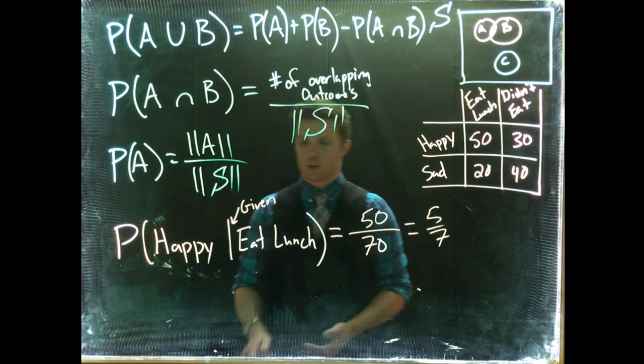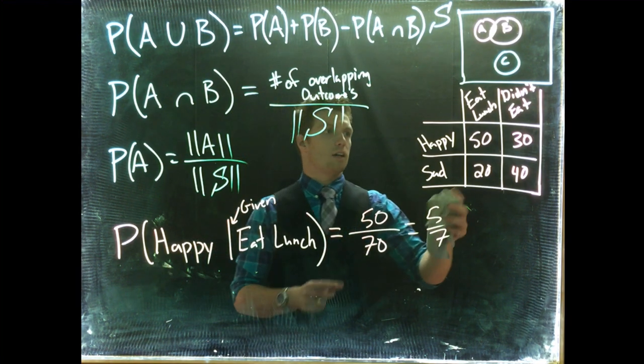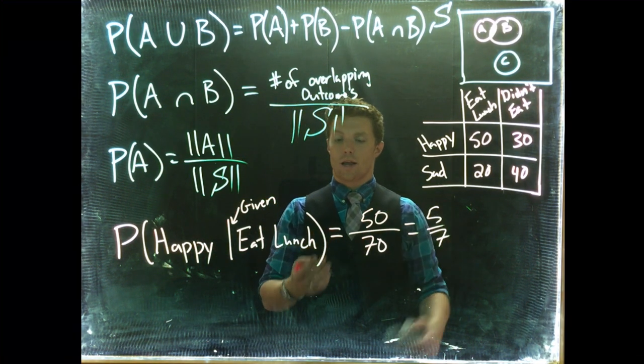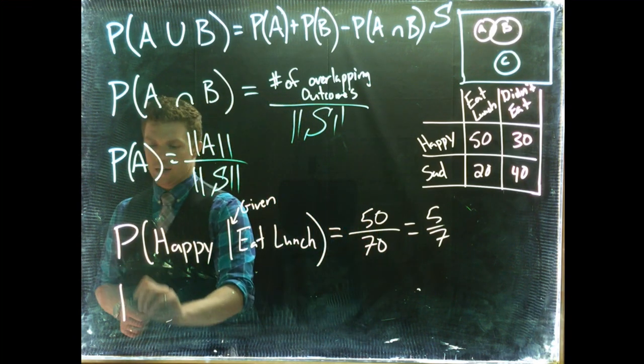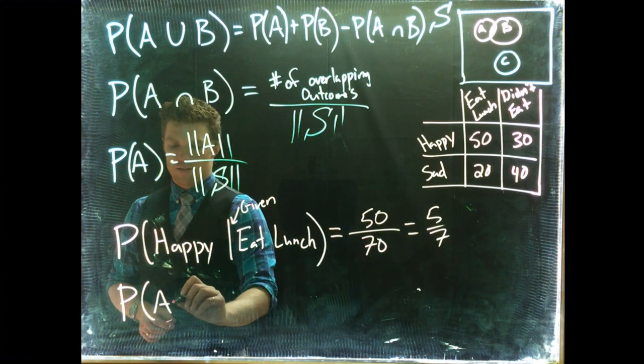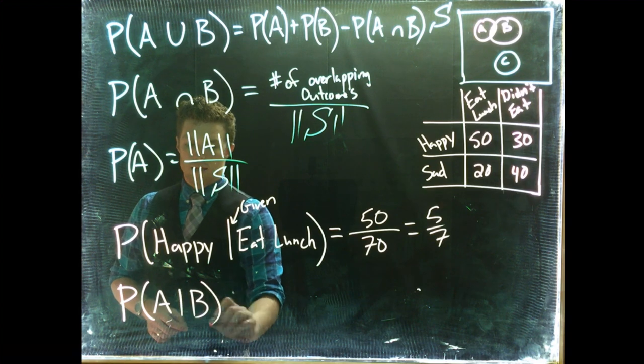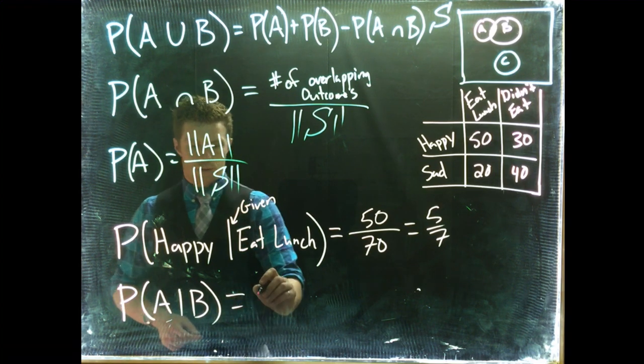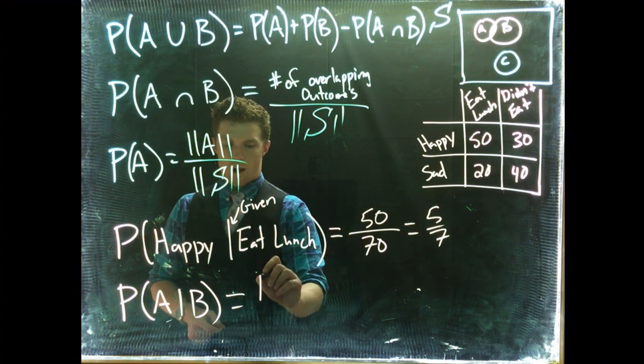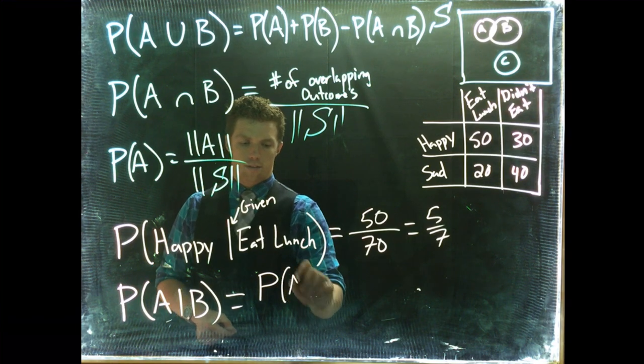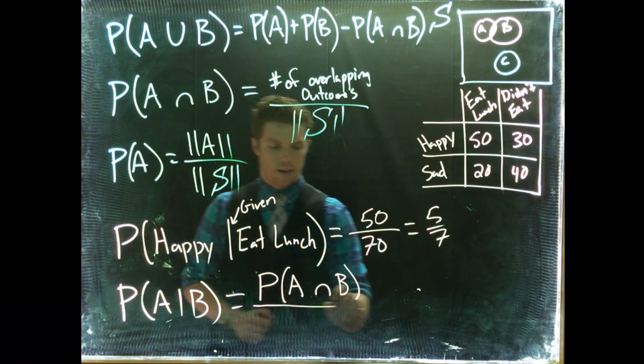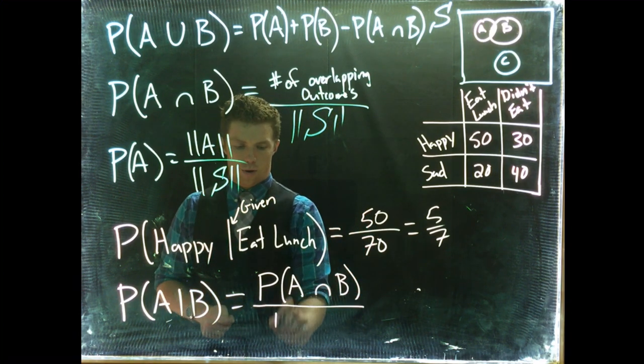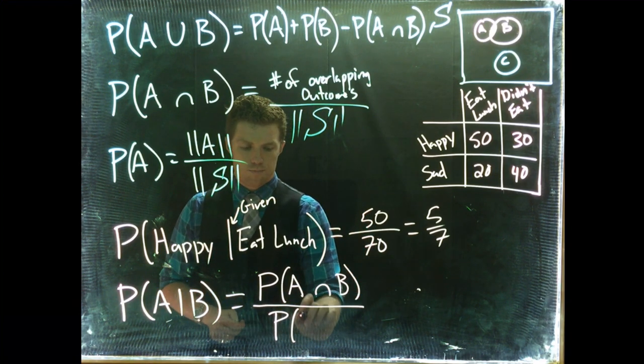Okay, now in more formal terms, this is kind of the shorthand way to do it. The long way to do it, let's get up the full-on equation. Probability of A given B is equal to the probability of A intersect B divided by the probability of B.